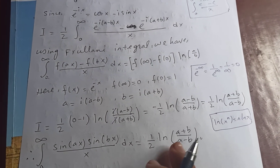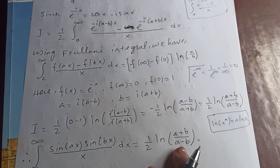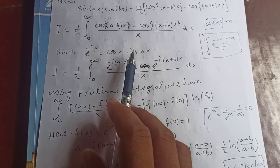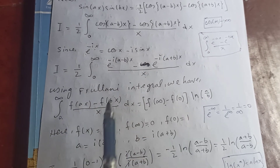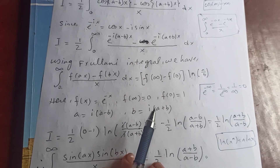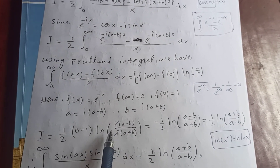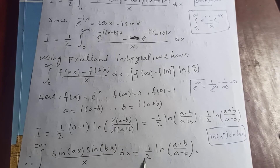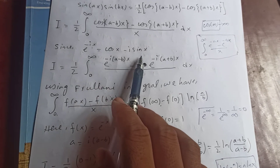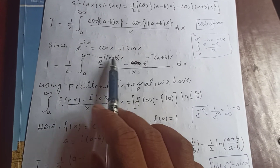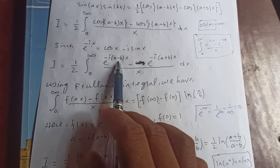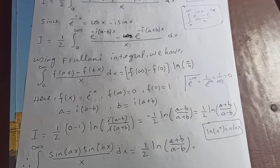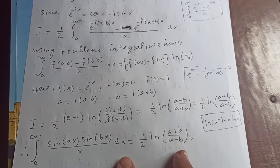So the final result is half of log of (a+b)/(a−b). Note that if you take the imaginary part, the integral would be zero, because there is no imaginary part present in the expression — as we can see here. So the imaginary part of this integral is just zero, and the real part gives us our answer. That's it!